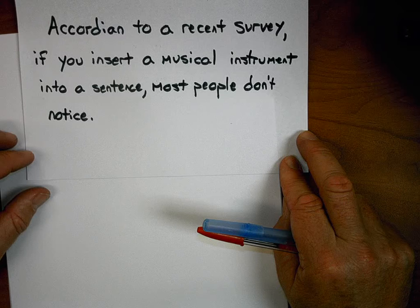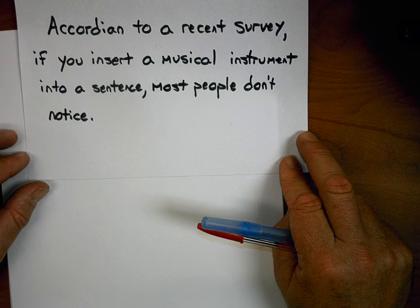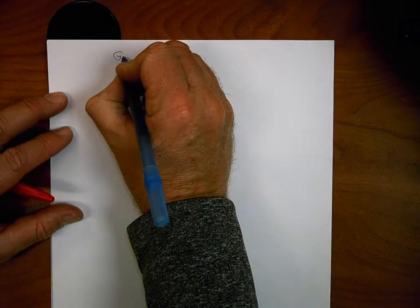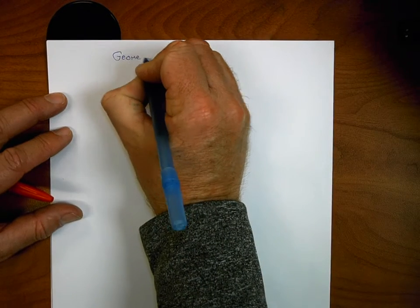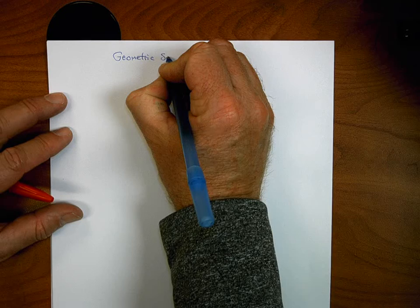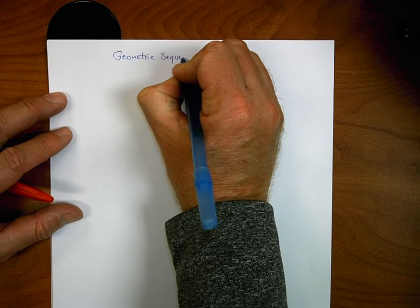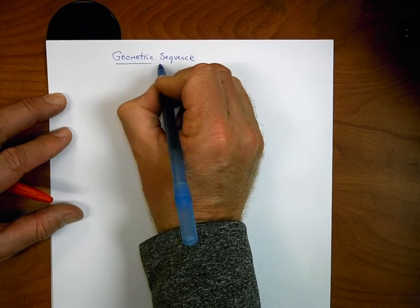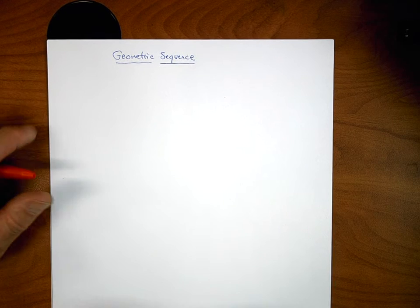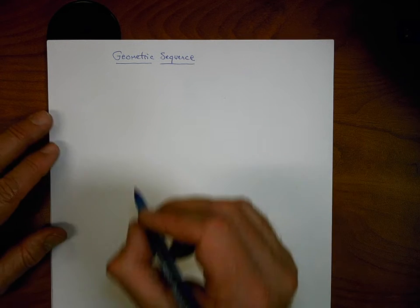Moving on, we need to solidify and make sure we understand geometric sequences. Remember that you can tell if a sequence — which is going to be a list of numbers that follow some type of pattern — if the pattern is created by multiplication, then we know that we have a geometric sequence.